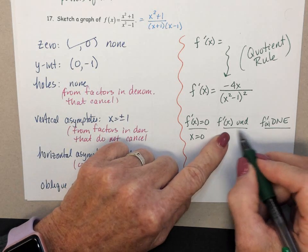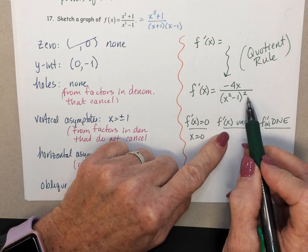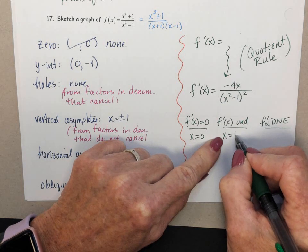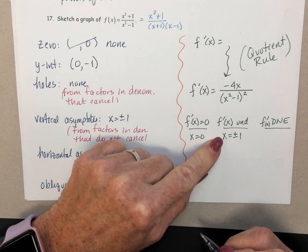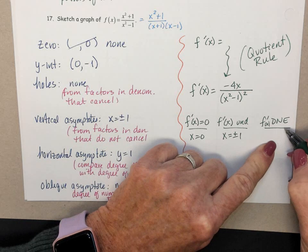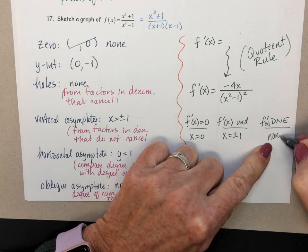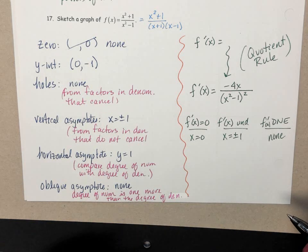f prime undefined, that's coming from when the denominator is equal to 0. And this will equal 0 when x is plus or minus 1. f prime does not exist, there aren't any. Again, that's predominantly from piecewise defined functions.